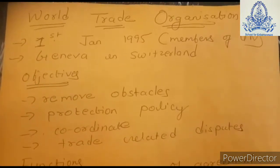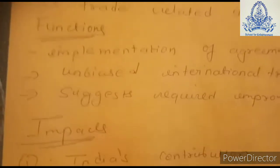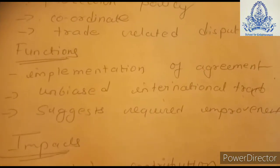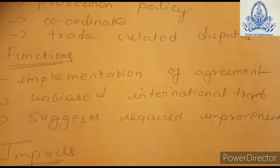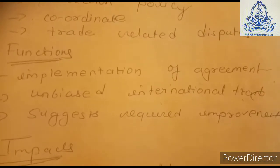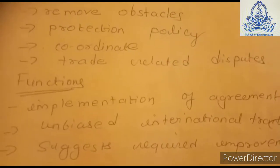Now let's see the functions of the WTO. First, to set up the required structure for implementation of agreements related to multinational trade. Second, the World Trade Organization plays a vital role in debate and negotiation for multinational trade. It encourages unbiased international trade and observes the national policies of different nations, suggesting required improvements.